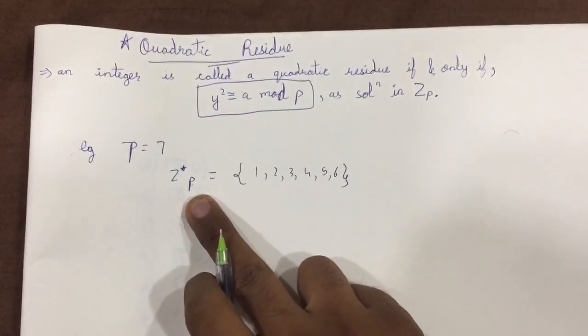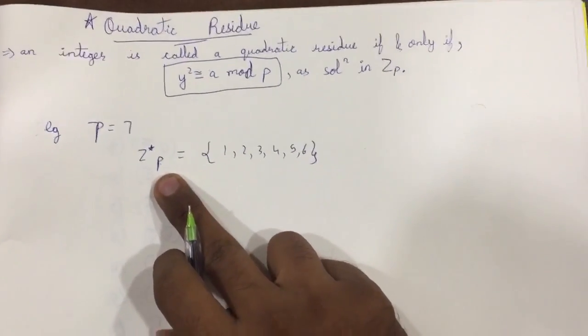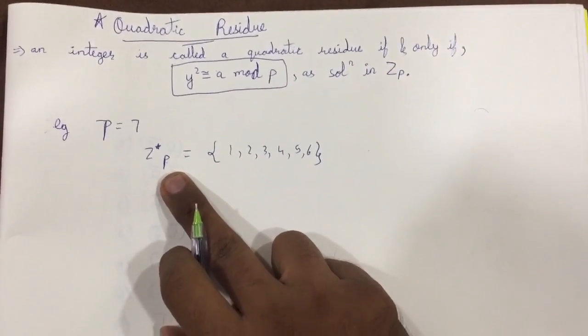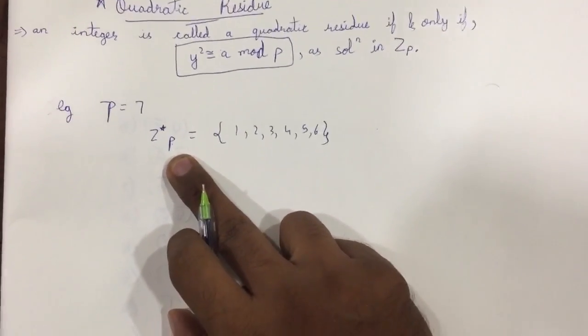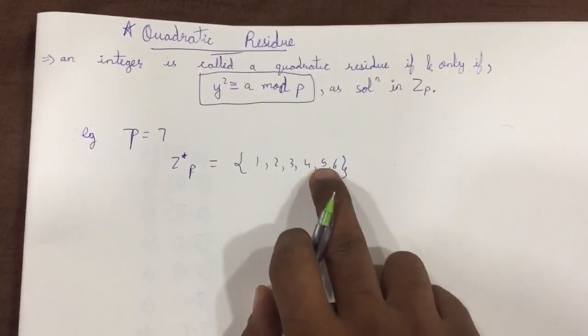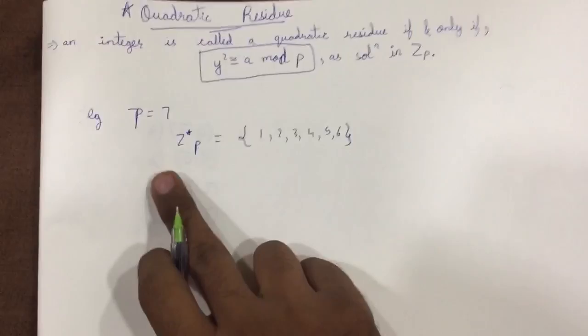We have taught you how to find out Z* in our first lecture, that is Mathematics of Cryptography. If you forgot, then do refer - we had provided the link in the top right corner. Alright, now let us solve this. What we have to do is take each and every number and square it.